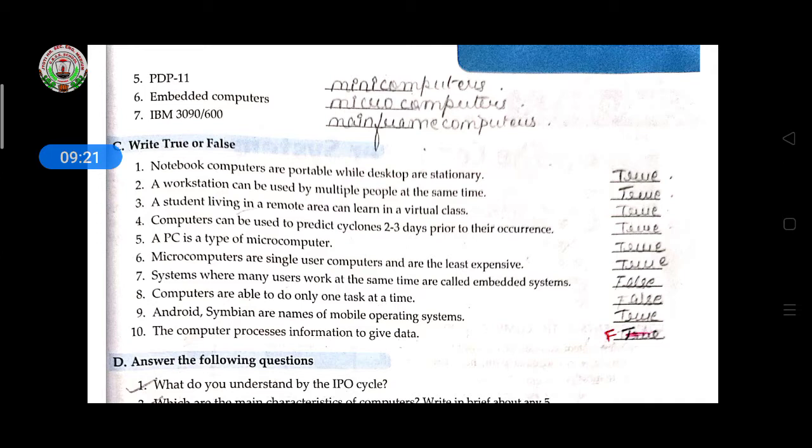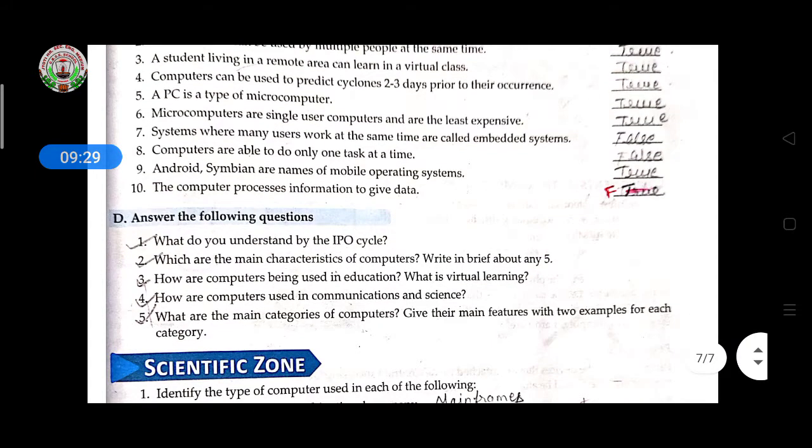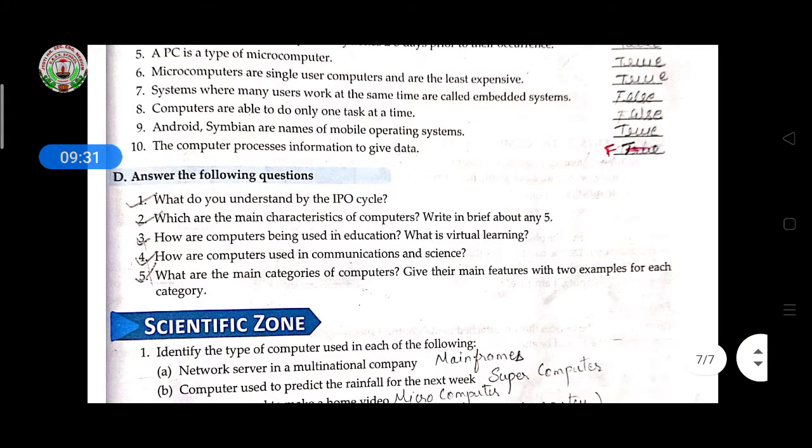Android and Simband are names of mobile operating system - true. Computers process information to give data - false. This answer the following question, these question answers only you have to write in your computer copy.